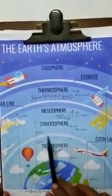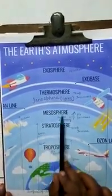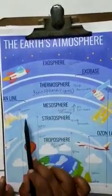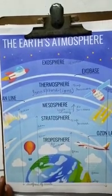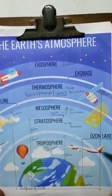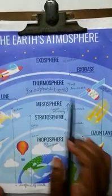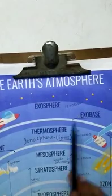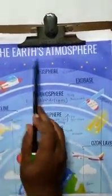Stratosphere, from the Earth's surface is 50 km. Mesosphere is 80 km from the surface of Earth. Thermosphere extends 450 km from the surface of Earth. And the last is the exosphere, it is 1600 km. So, this is the explanation of the Earth's atmosphere.